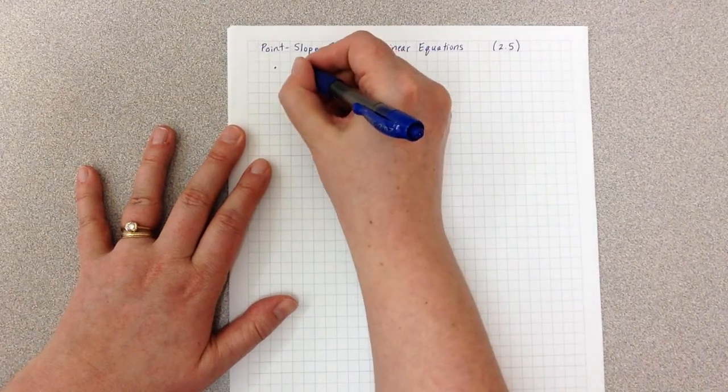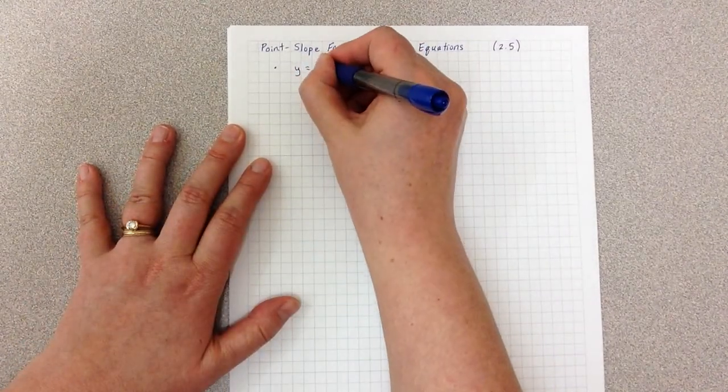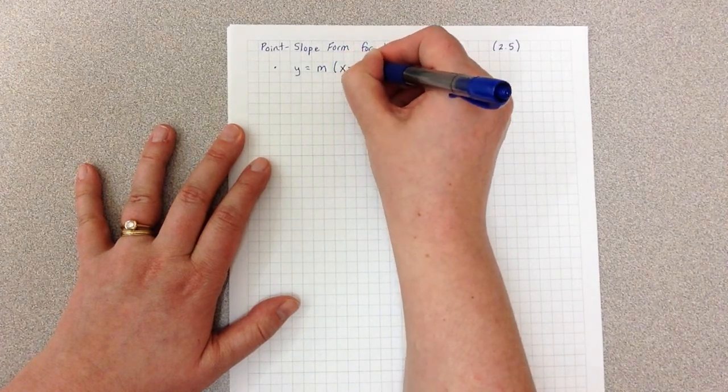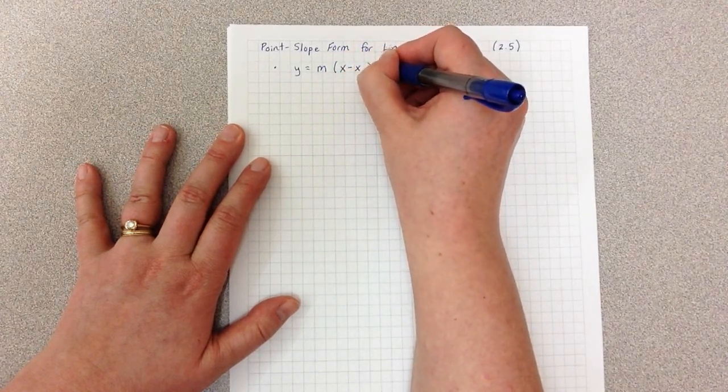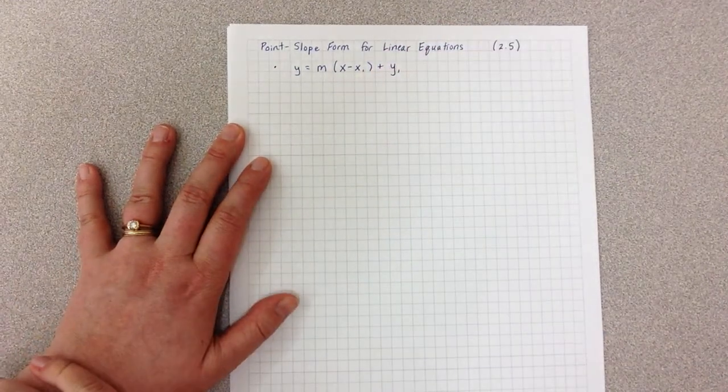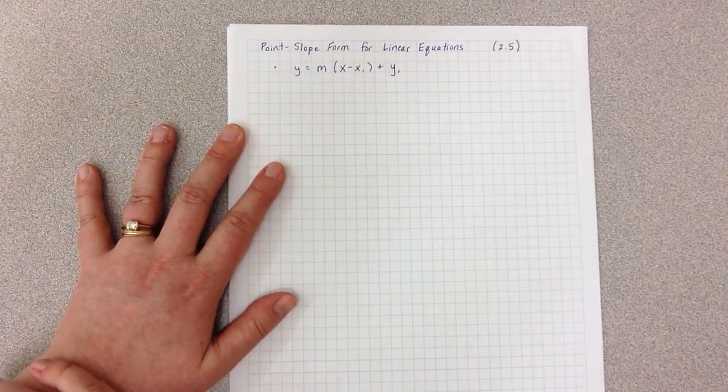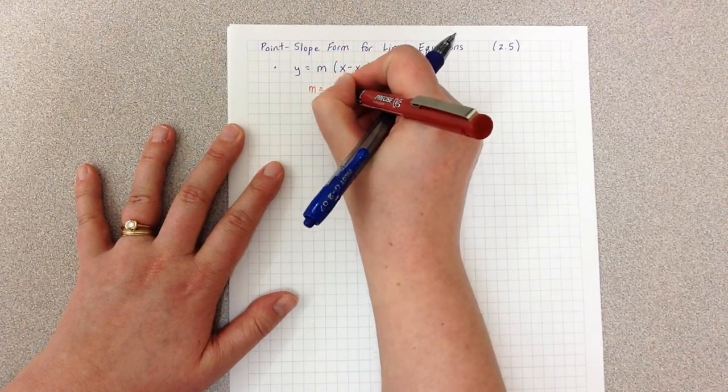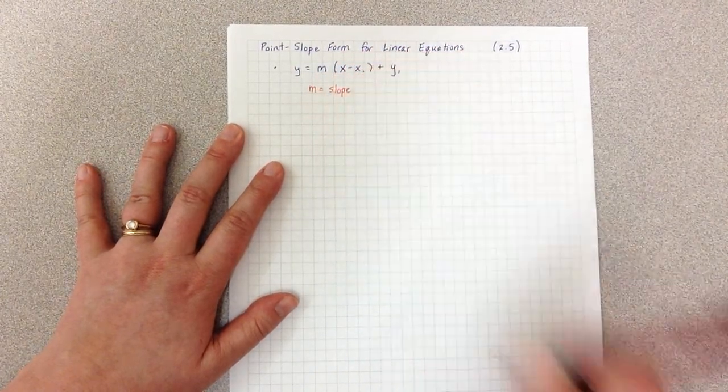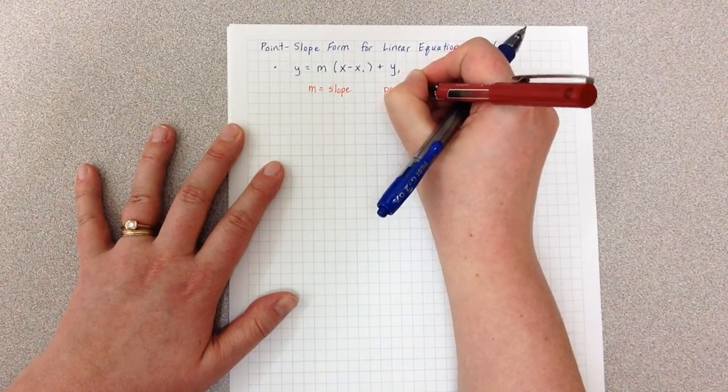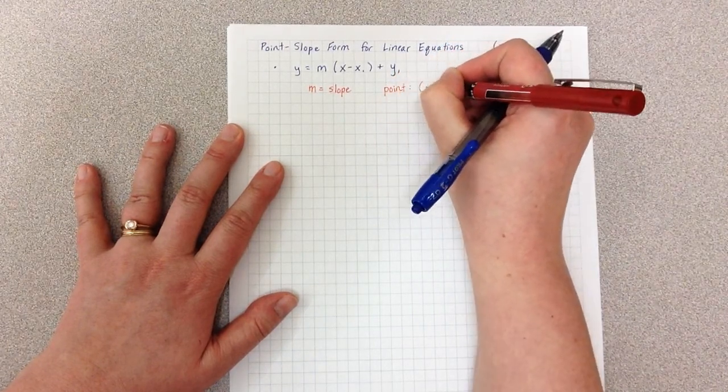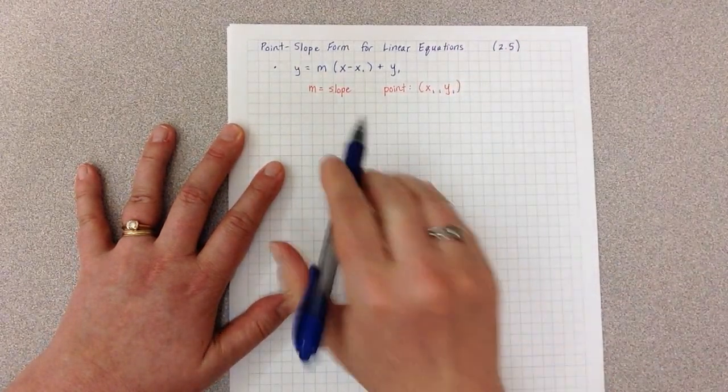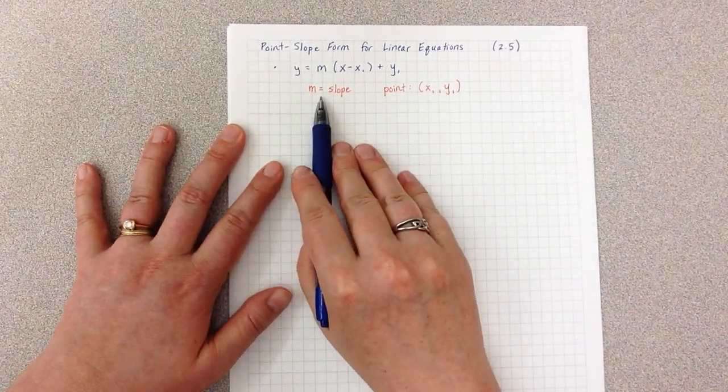And we define point-slope to be y equals m times the quantity x minus x1 plus y1. And in this equation, m stands for slope, and our point is x1, y1. Hence the name point-slope.